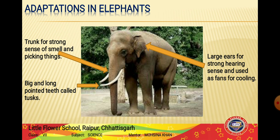Elephants have very large ears. The large ears allow them to hear even the lowest sounds made by predators, giving them a strong sense of hearing. When the temperature rises and elephants feel hot, they flap their large ears back and forth, using them like a fan to cool themselves down.